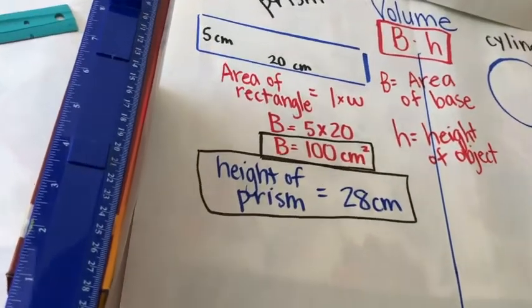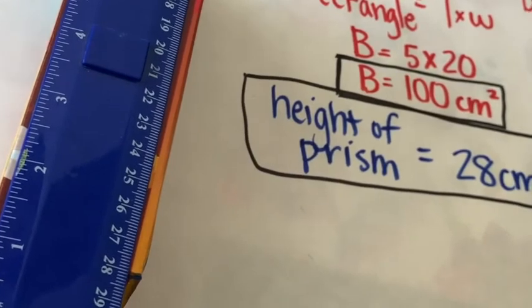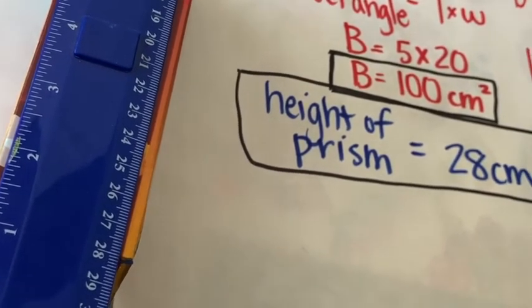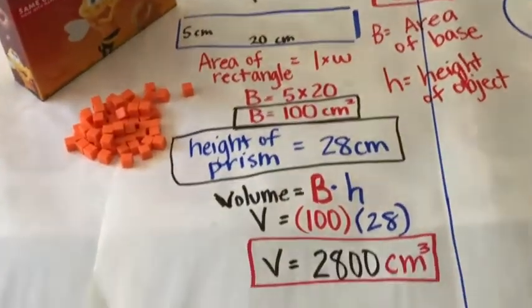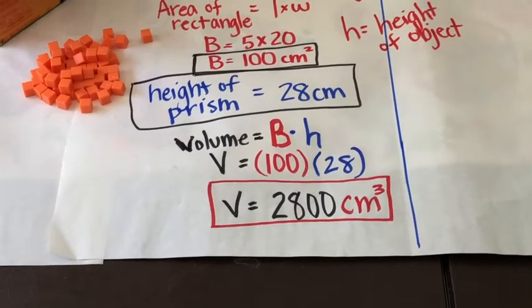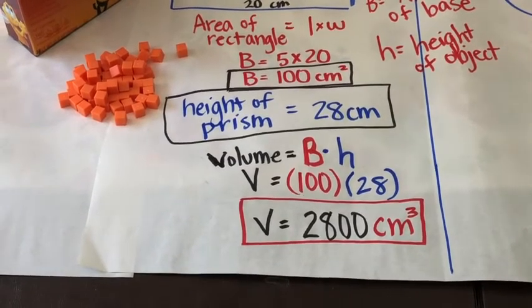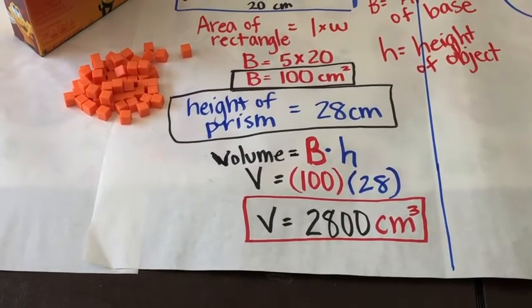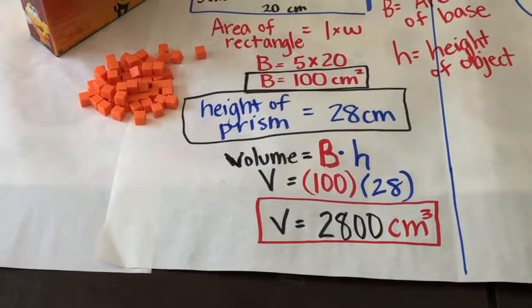Next I measured the height of my prism using a centimeter ruler and found that it was 28 centimeters. The final step was to insert the numbers into the formula: volume equals the area of the base times the height. Since the area of the base is 100 and the height is 28, we multiply those together and find that the volume is 2800 centimeters cubed.